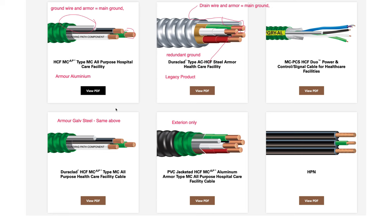There are a couple of different versions of this. You have the HCMC, and then you have a product that has a control wire with similar construction. And then there's what they call Duroclad — it's the same as the HCMC cable but with galvanized steel armor. And then they have an exterior-rated product which has a PVC jacket.